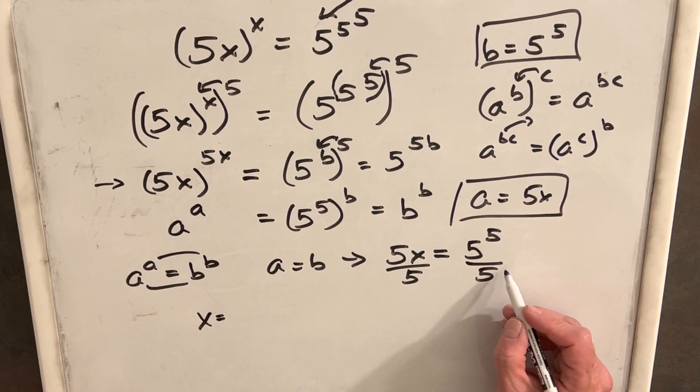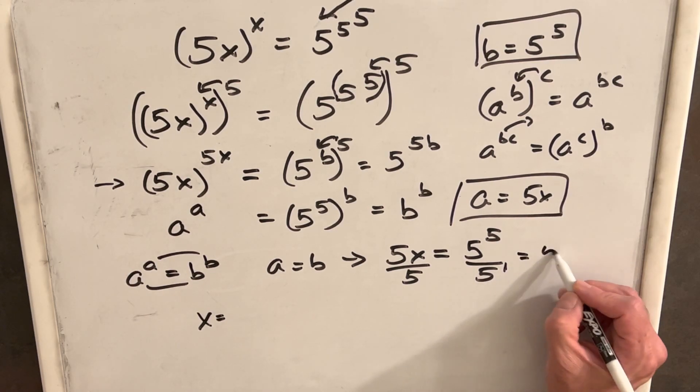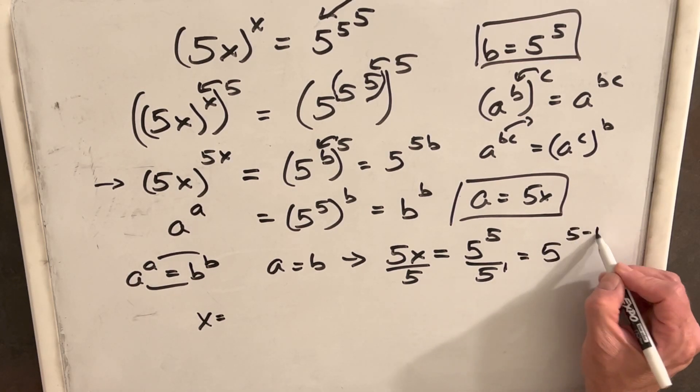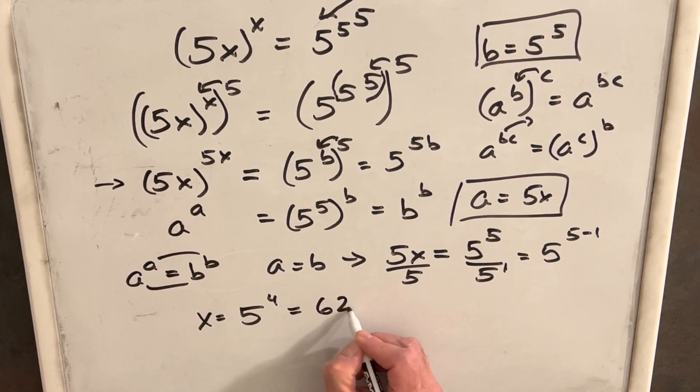And then what we can do, we get a little implied one there. So we can just subtract - this is the same thing as 5 to the 5 minus 1, which is x equals 5 to the 4th, which equals 625.